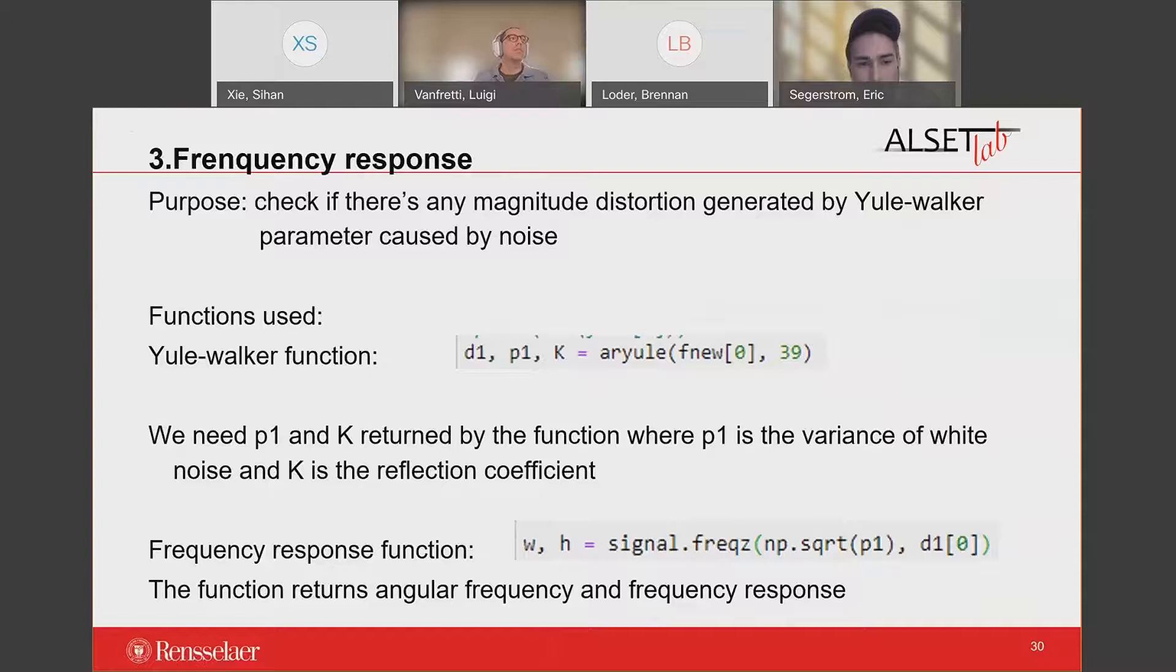The third function is the frequency response, which the purpose is to check if there is any distortion in the magnitude caused by noise. Noise is ubiquitous in all circumstances, which may cause transmission errors and may even interfere with communication process. Therefore, the removal of noise distortion is significant in signal processing. The two functions we use are Yule-Walker function and the frequency response function. We use the variance of residuals and the reflection coefficient from Yule-Walker equation and substitute these values into the frequency response function. Then we can get the angular frequency and the frequency response.